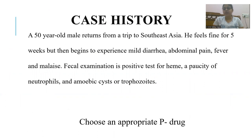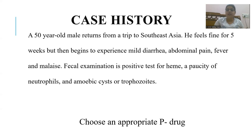This 50-year-old male is suffering from diarrhea, abdominal pain, fever, and malaise. There is presence of blood in the stool and presence of amoebic cysts and trophozoites in the fecal examination. This is a case of acute amoebic dysentery because of the presence of heme and trophozoites in the stool along with diarrhea, abdominal pain, and fever.